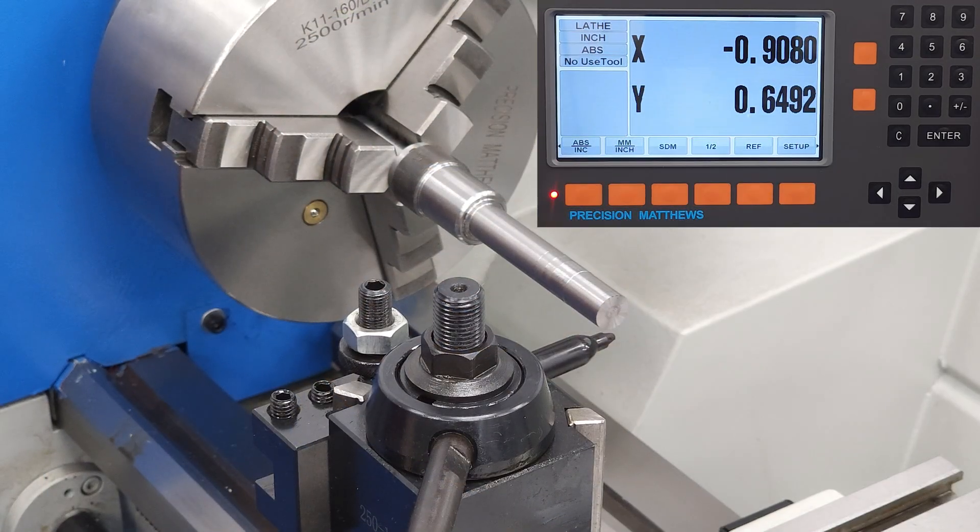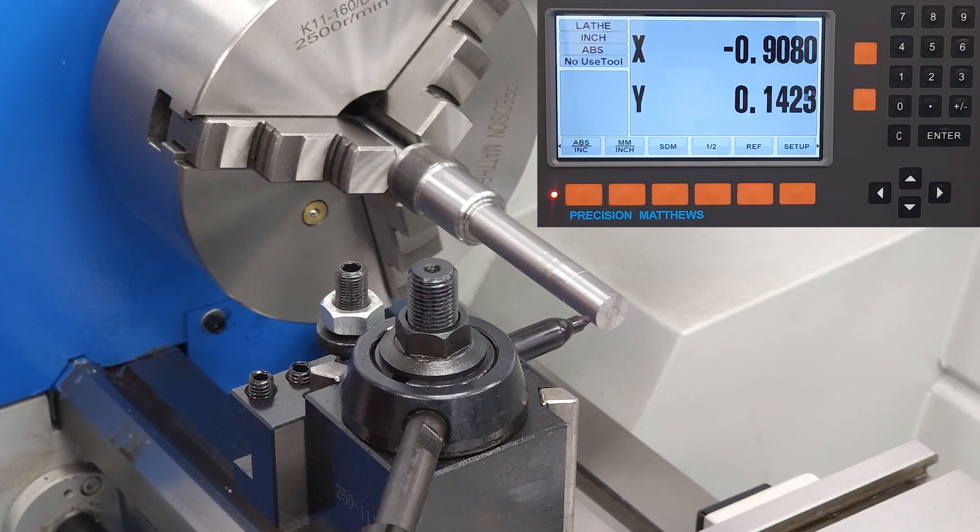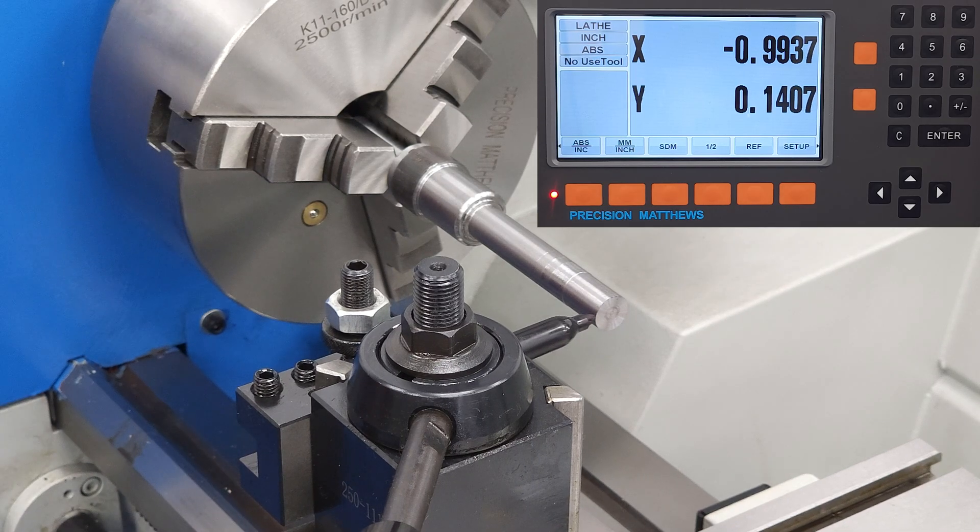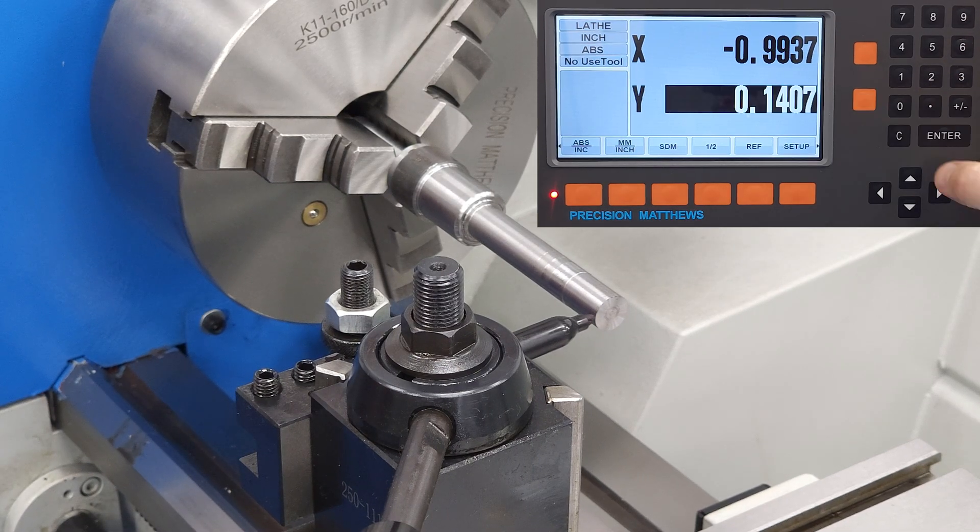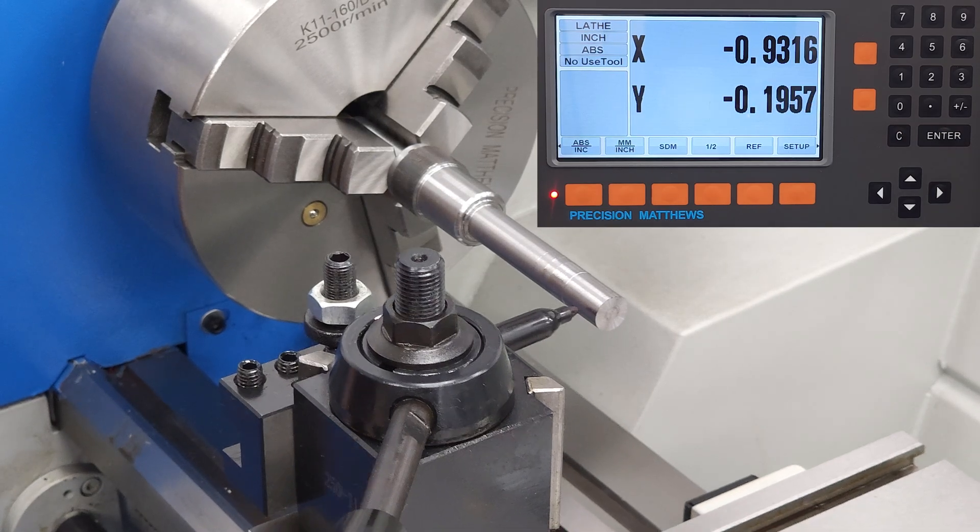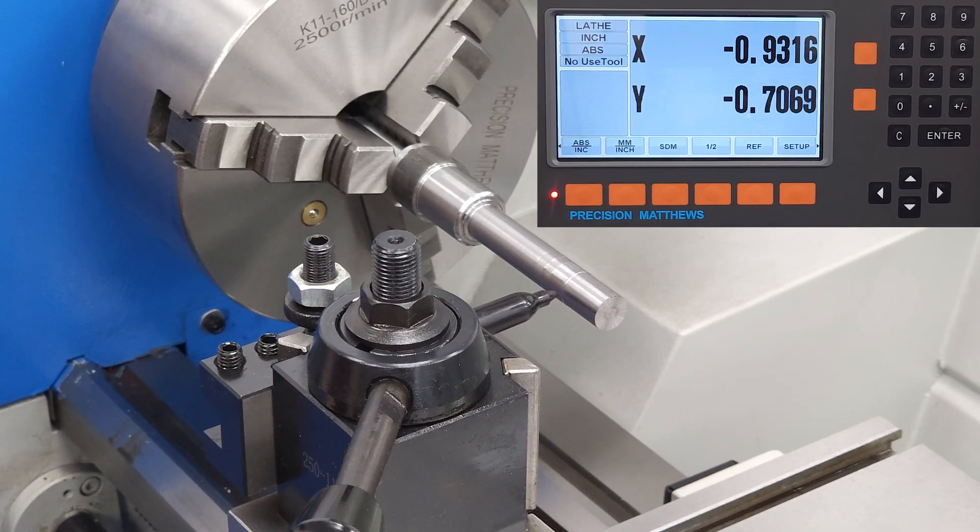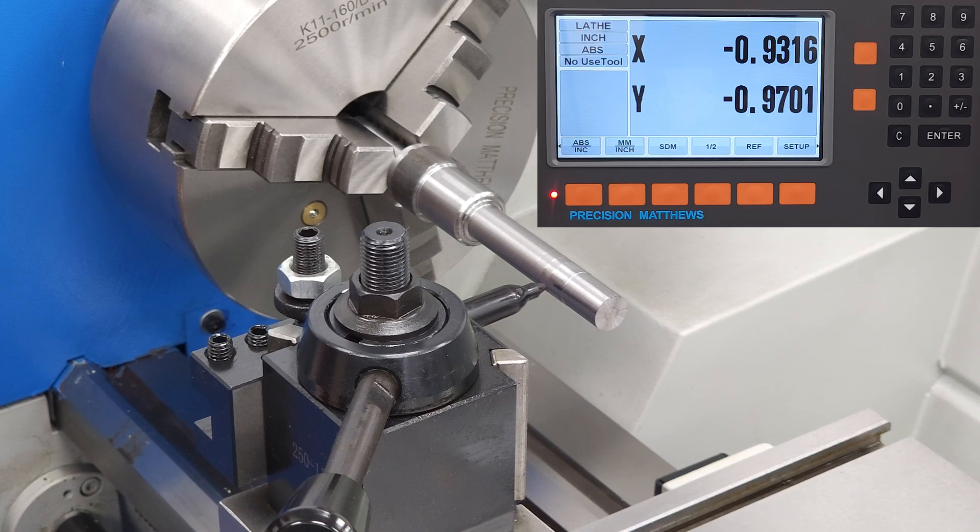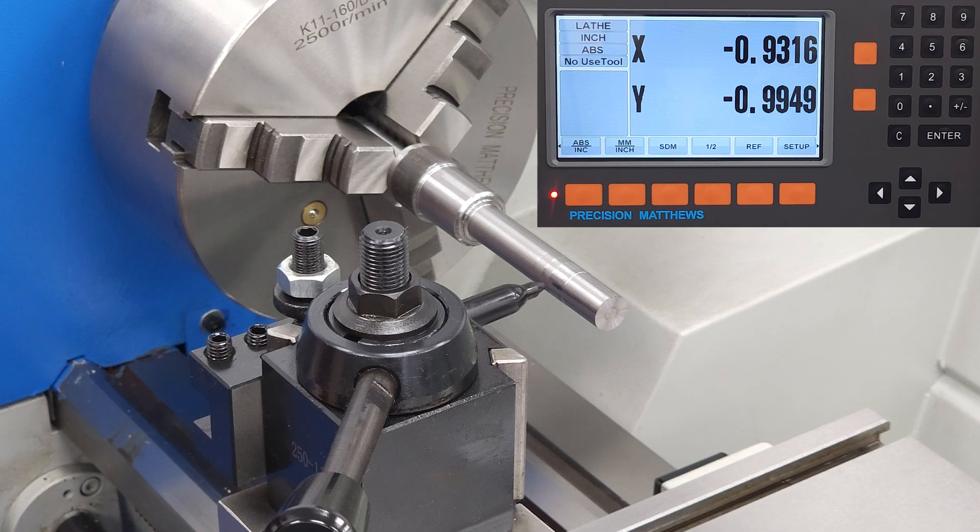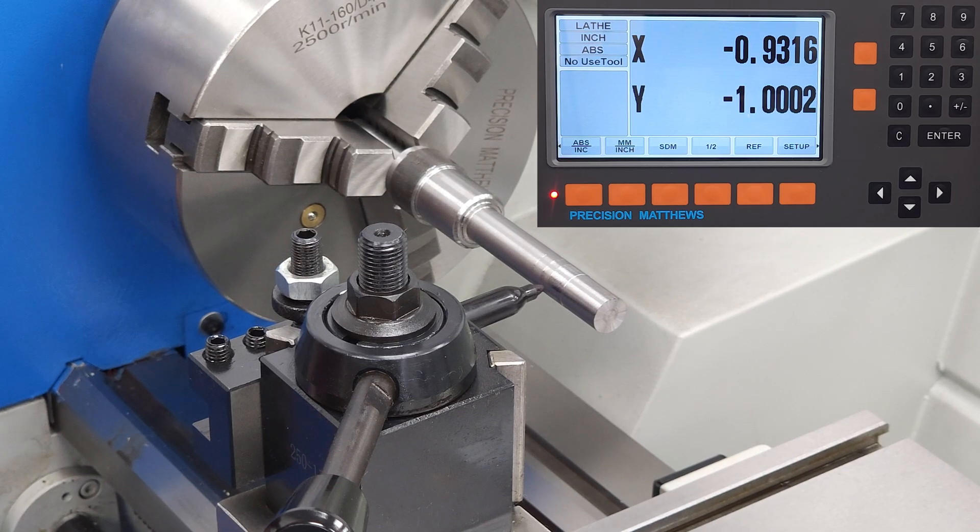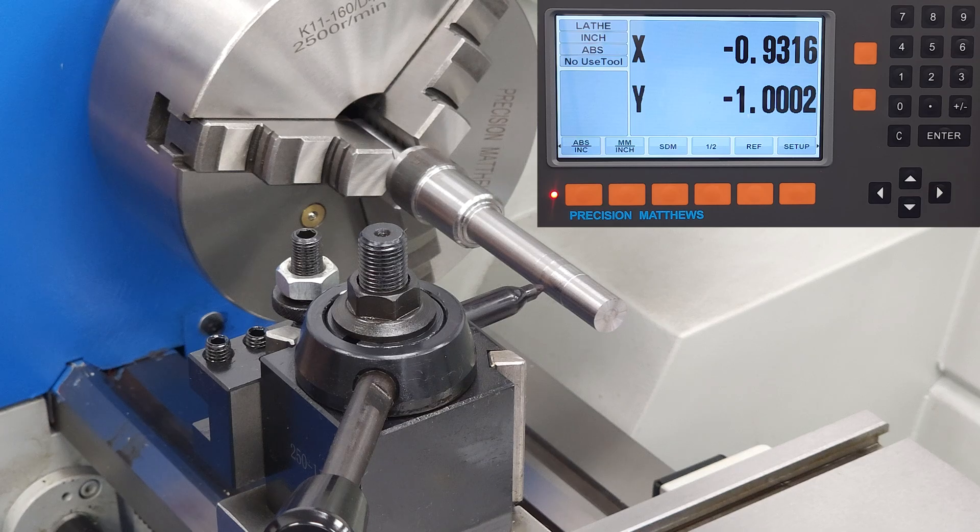This same DRO technique works to face or part off a workpiece at a specific length, and it's even more idiot-proof because you don't have to worry about radius or diameter. You can start by touching off the tool at the very end of the workpiece to get our reference data, then zero out the DRO. Let's say I want to take exactly 1 inch off of this workpiece. I simply move the carriage until it reads 1 inch on the DRO, then I take my parting or facing cut.